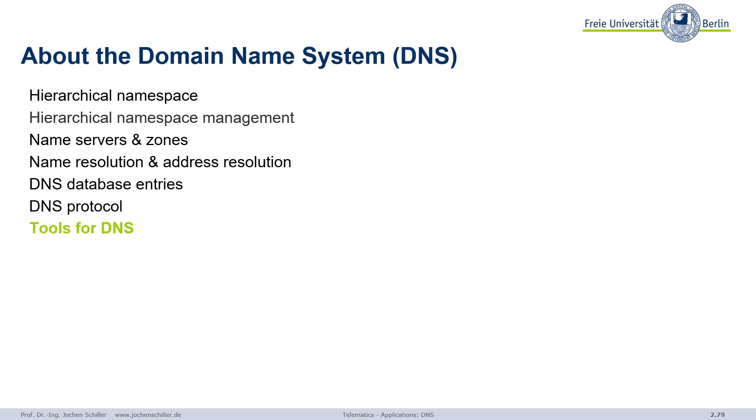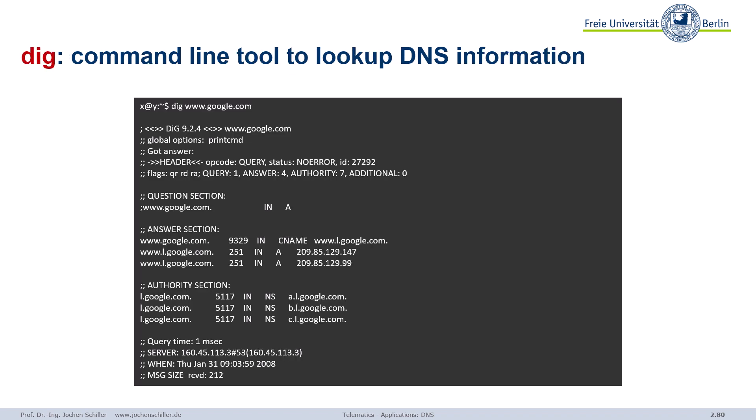Finally, two simple but powerful tools. The domain information groper — dig — lets you dig for information. For example, to check what we know about Google's web server: we ask for the address, and the answer is not simple. Google may say: check www.l.google.com. And for l.google.com, there are three nameservers. In the end, you get two addresses — multi-homed. You can then contact one and get more information. Dig is quite powerful.